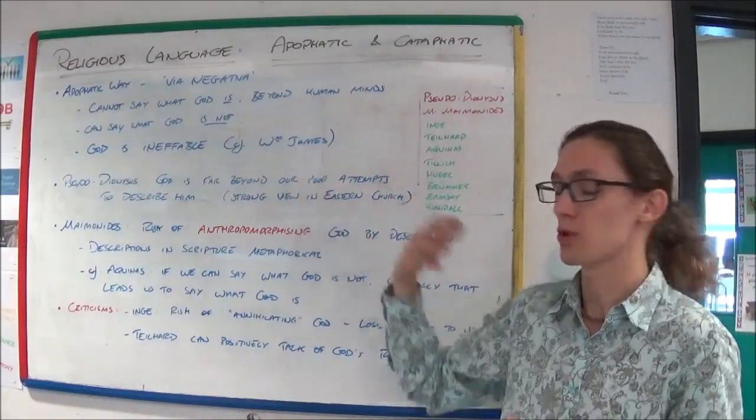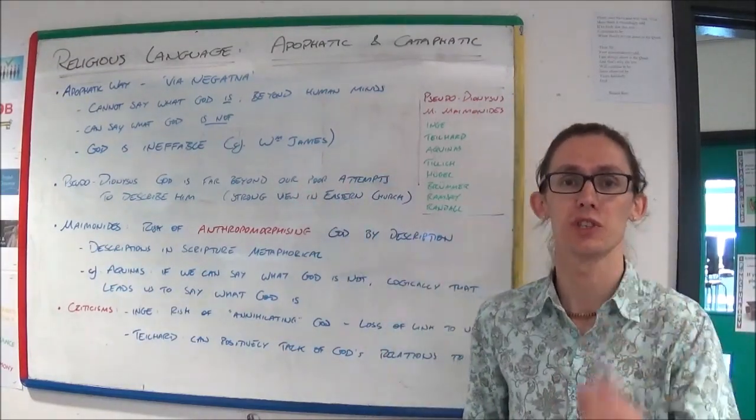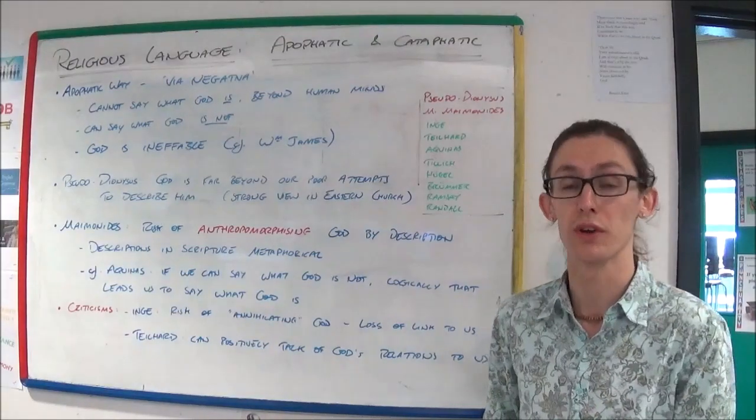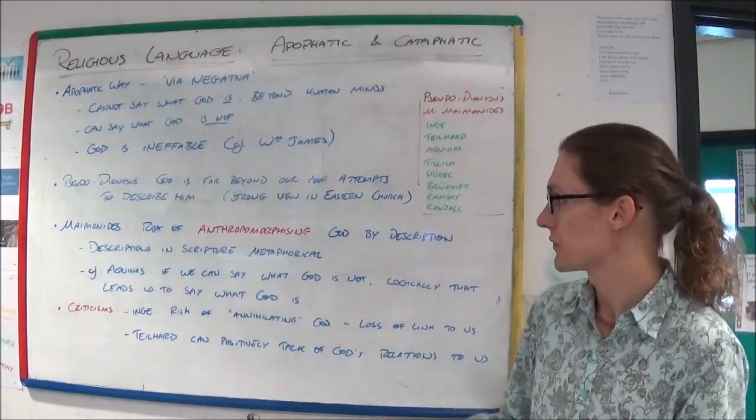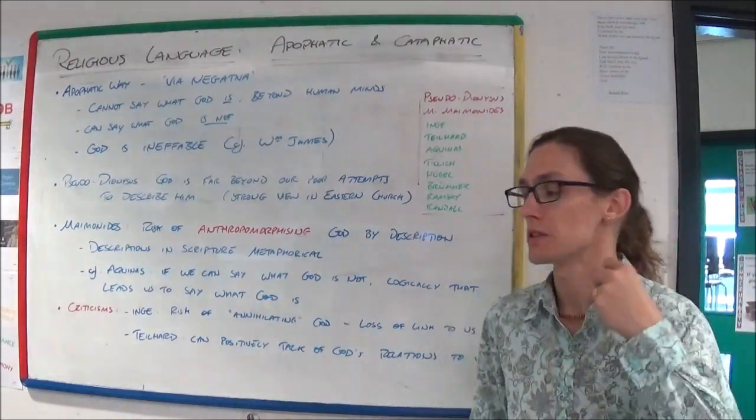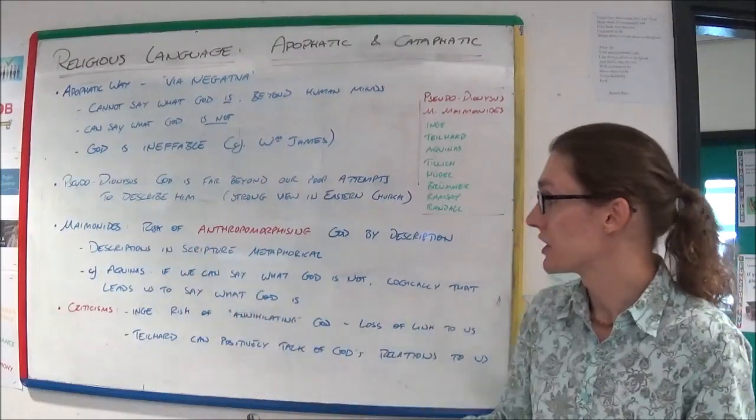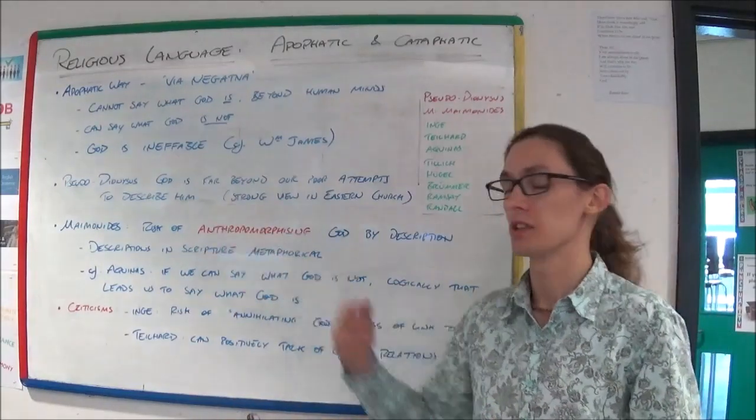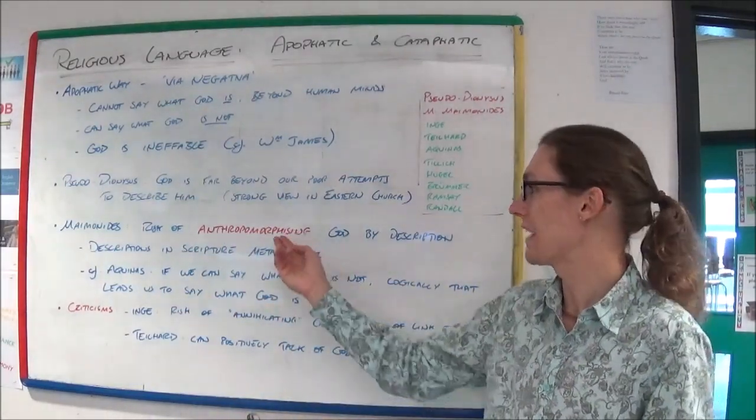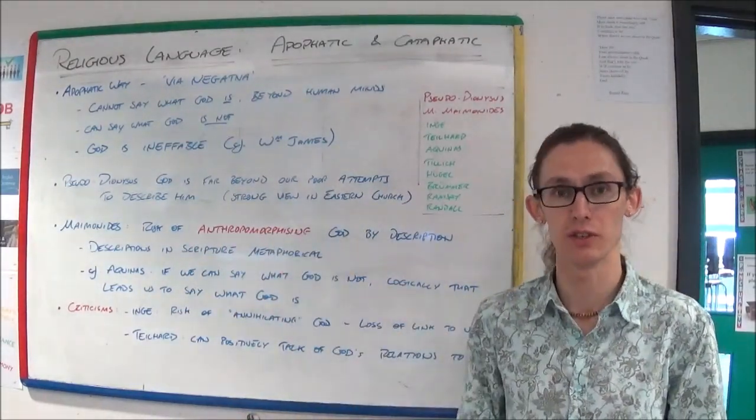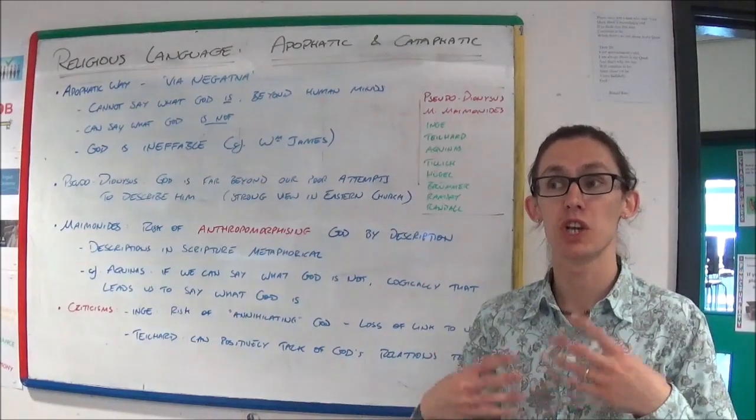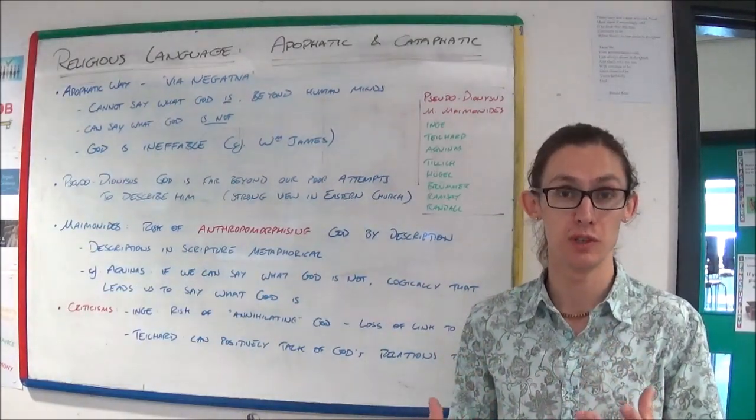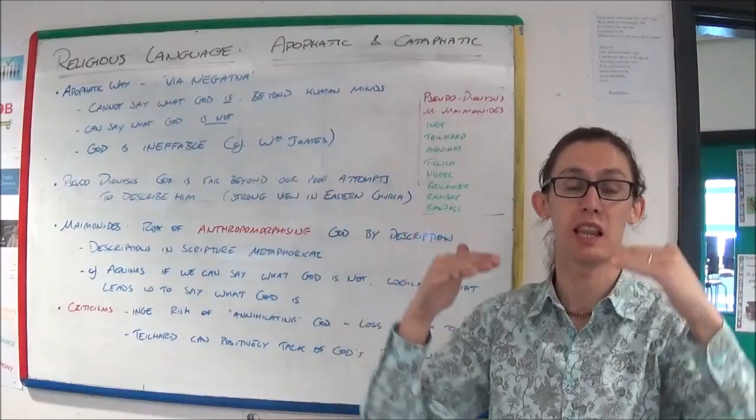And as I said, this is a very strong view in the Eastern Church. You come across it in Eastern Orthodox, Russian Orthodox Church in particular. And Rabbi Maimonides also added to this, built on these ideas, and suggested that the via negativa avoids the risk of anthropomorphising God, or suggesting that God is like human, basically bringing God down to the level of humans.